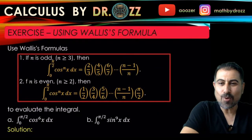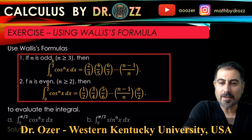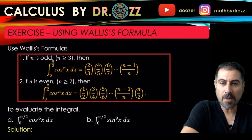All right, let's use Wallis's formula to evaluate the integral of cosine to the power of 6x from 0 to pi over 2.